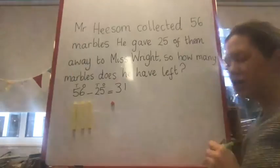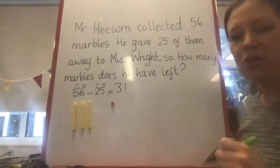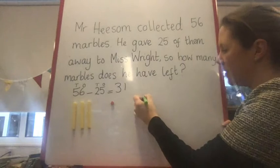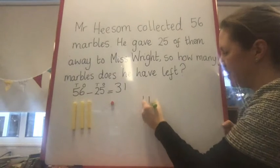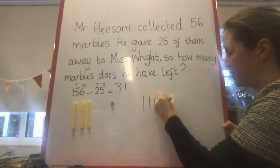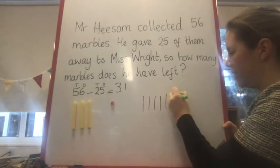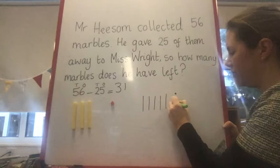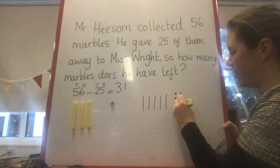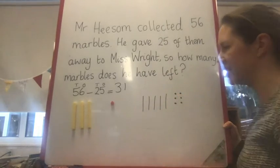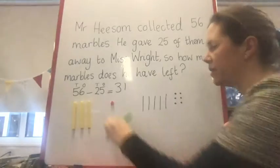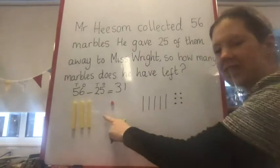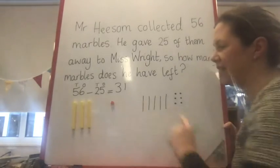You can also do that with your jottings. So I'm going to start by drawing: 10, 20, 30, 40, 50, 51, 52, 53, 54, 55, 56. And then I'm going to take away that 25 just like I did with the Dienes.